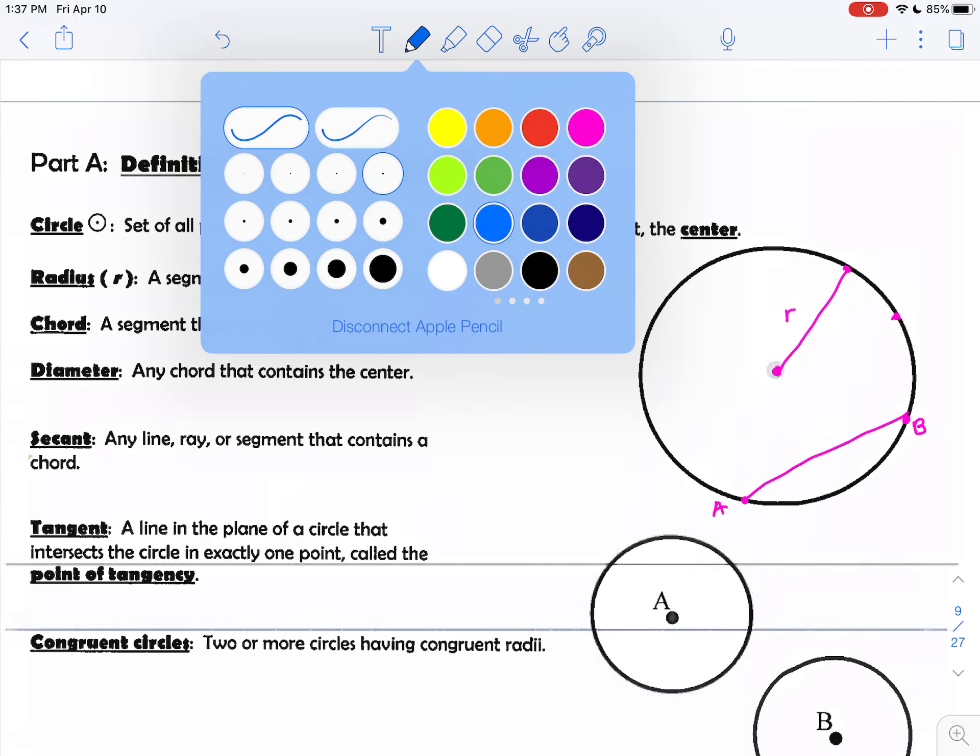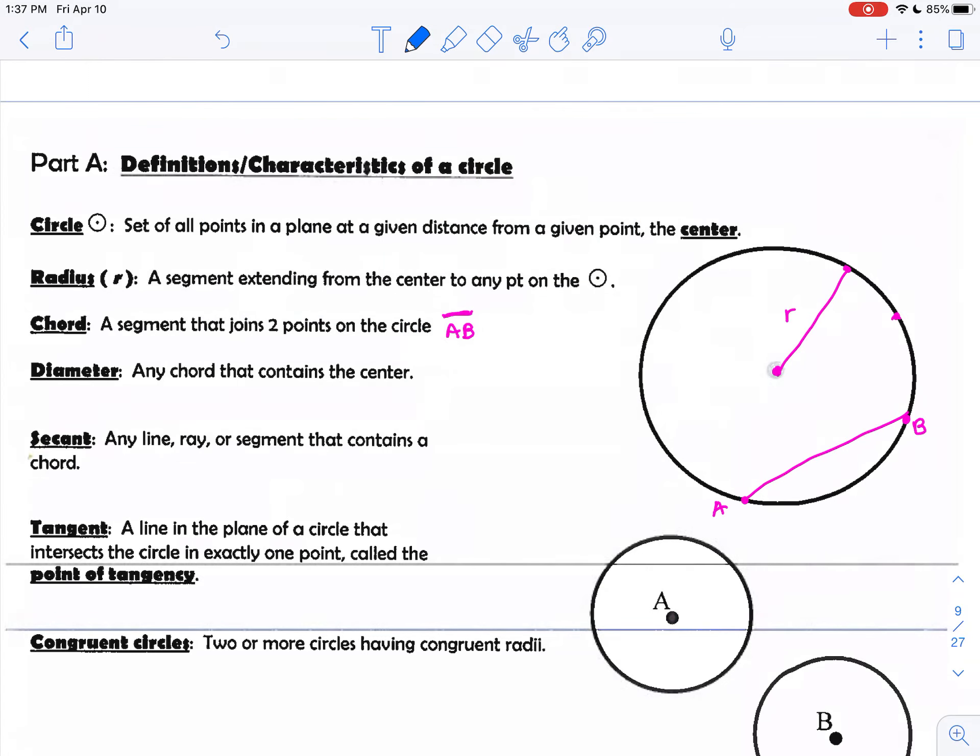Any chord that actually goes through the center, which I will change here to blue, is called the diameter. So two points on the circle, but this time that value, that chord goes through the center of the circle. We'll call that CD. So chord CD is the diameter.